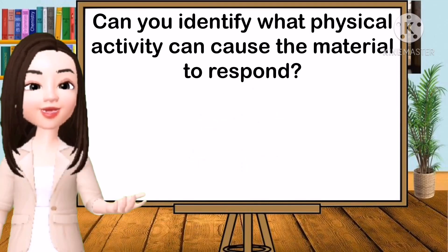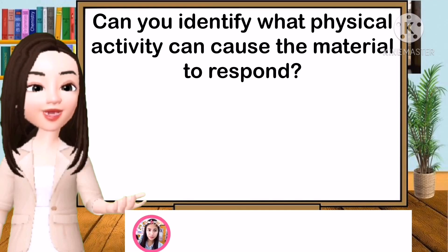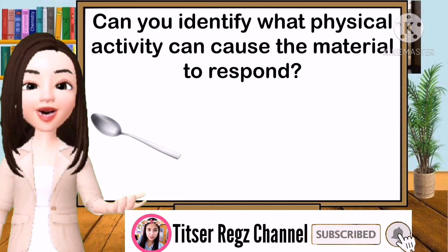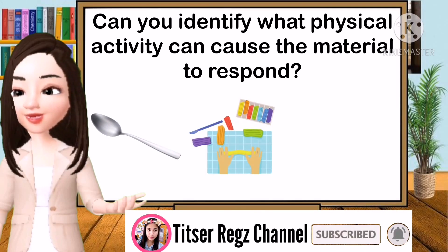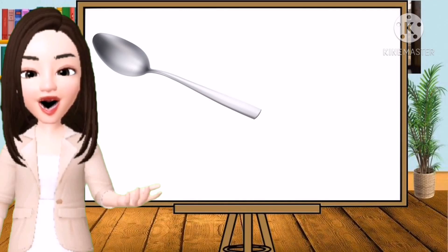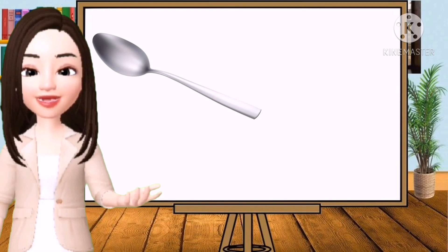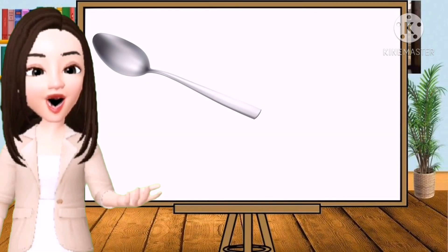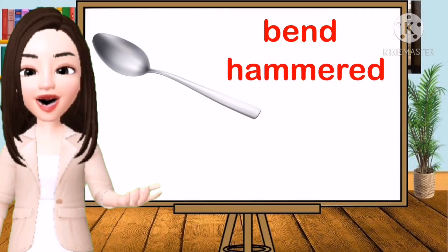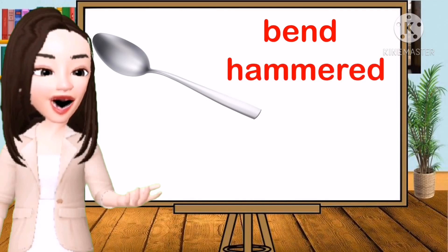As part of a review, can you identify what physical activity can cause the material to respond? Our first material is a metal spoon, second is modeling clay, and third is a log. What action or physical activity can you do to change the properties of a metal spoon? You can bend and hammer the metal spoon.